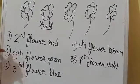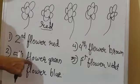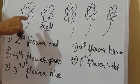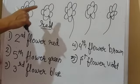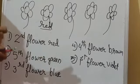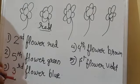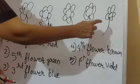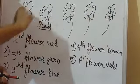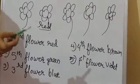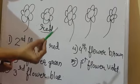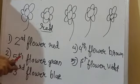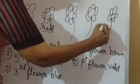And the next question is, fifth flower green. Find out the flower which is in fifth position and color it with green. First, second, third, fourth, fifth. Okay, this is our fifth flower. And which color we want to color it with green color. So, color it with green.